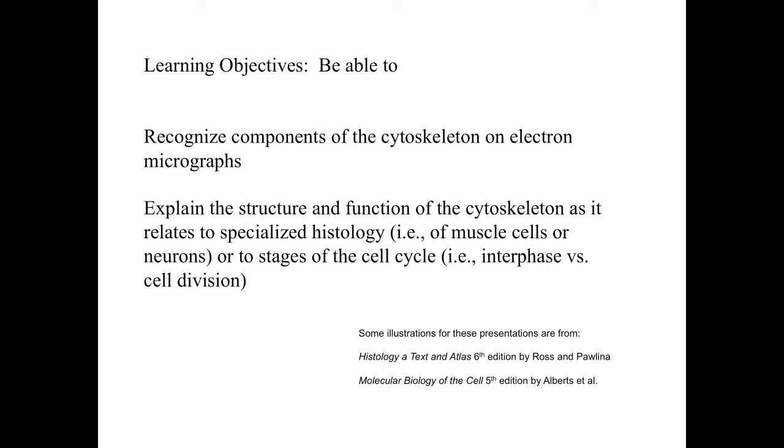Your learning objectives: you should be able to recognize components of the cytoskeleton on electron micrographs, and you should be able to explain the structure and function of the cytoskeleton as it relates to specialized histology — for example, as it relates to the histology of muscle cells, neurons, or to stages of the cell cycle, comparing the cytoskeleton in an interphase cell versus a cell going through division.